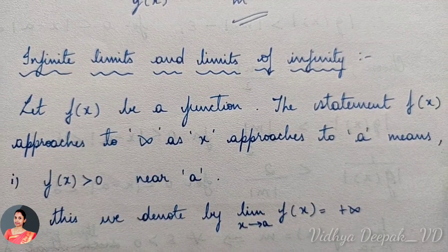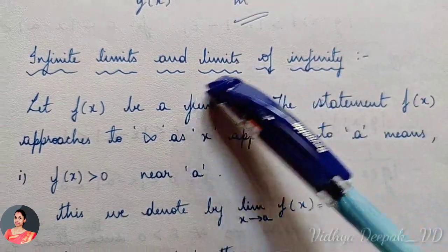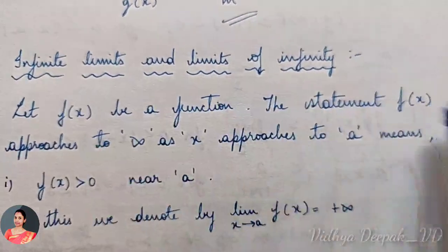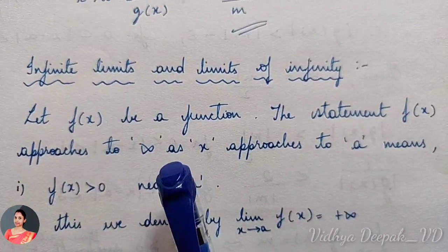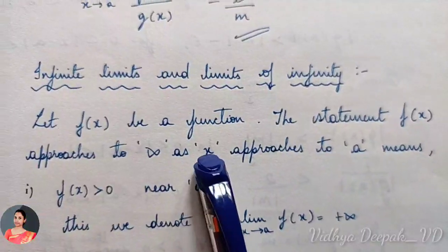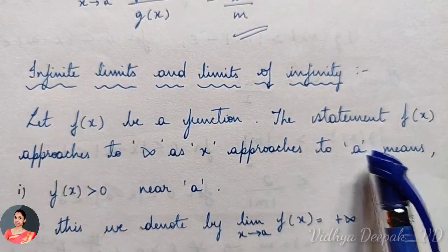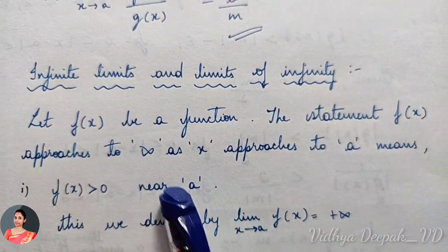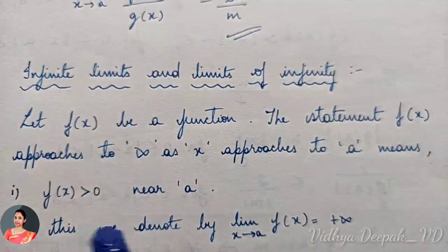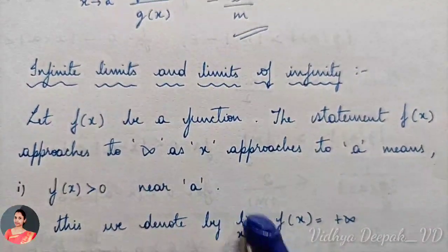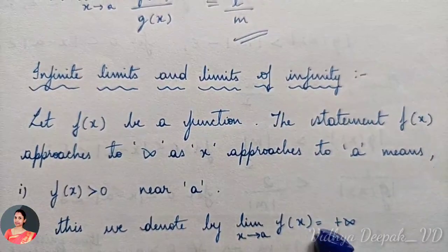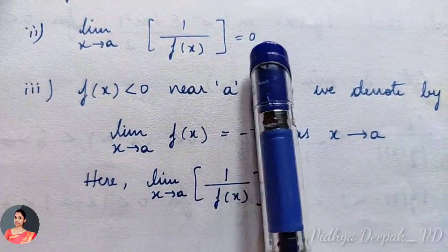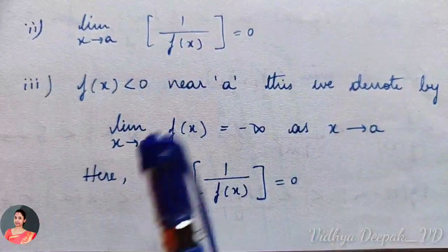Good afternoon everyone. Today let's see infinite limits, or limits of infinity. We will take f(x) to be a function. The statement which says f(x) approaches infinity as x approaches a means f(x) is greater than 0 near a. We denote this by: limit as x tends to a of f(x) is equal to plus infinity. And limit as x tends to a of 1/f(x) is always 0.